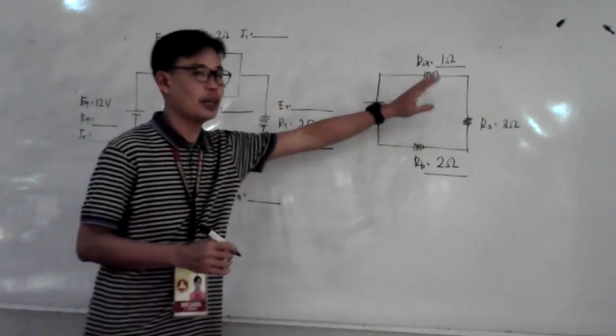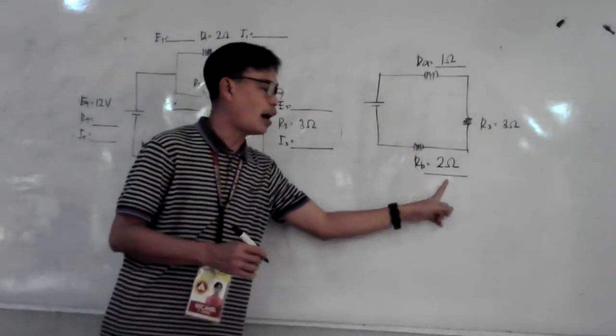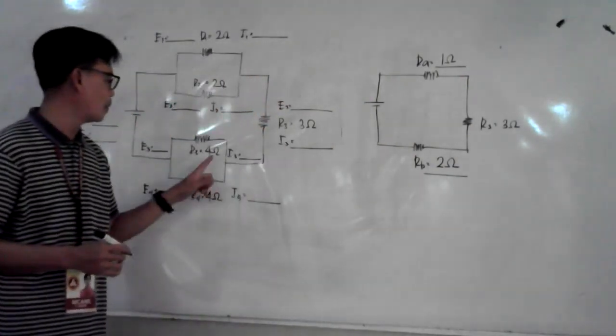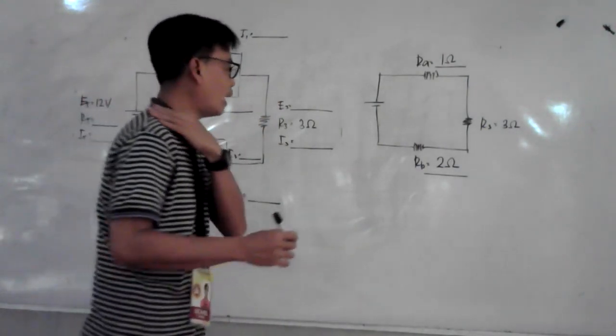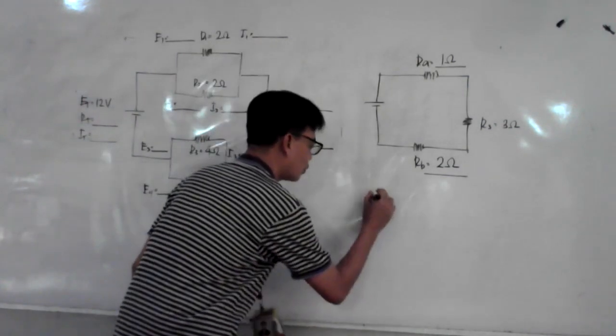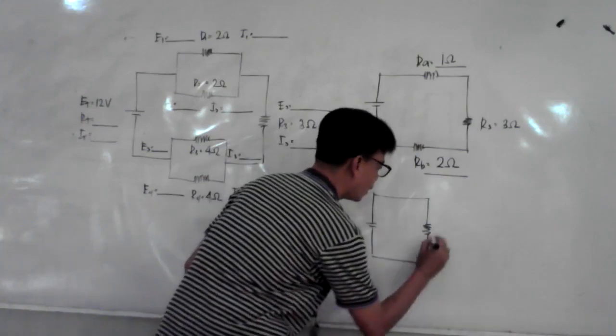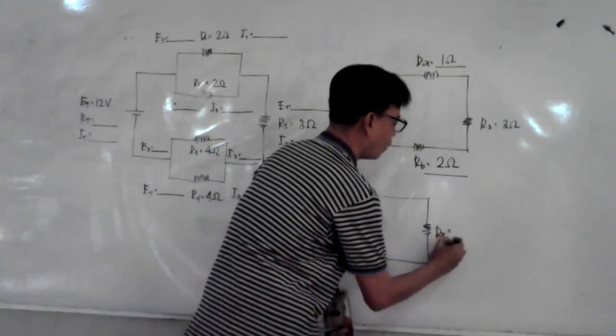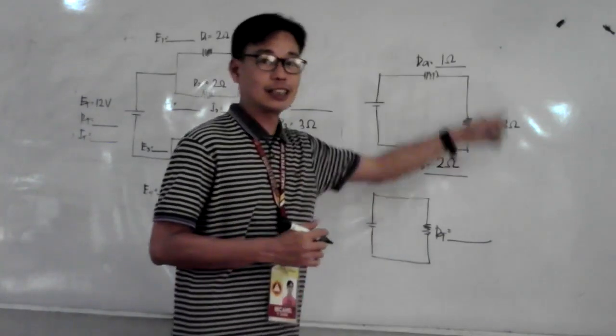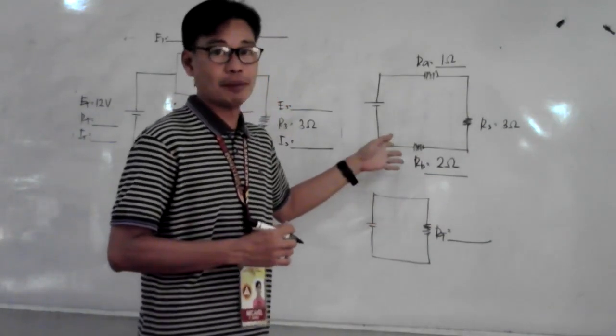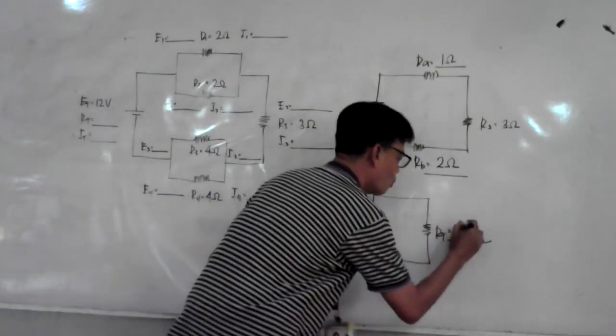We have the value for Ra, 1 ohm, taken from R1 and R2. The value for Rb is 2 ohms, taken from R3 and R4. That's the formula we learned for two resistors in parallel. Finally, our last illustration. This is R total. R total equals the sum of the 3 resistors in series. We have 1 plus 3 plus 2, so you have 6 ohms.